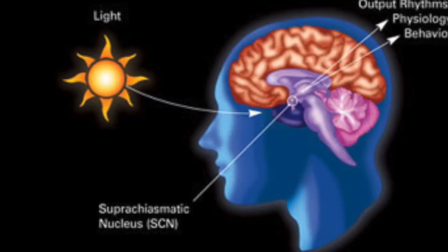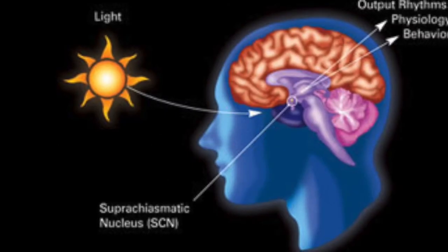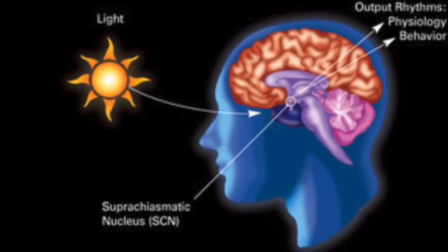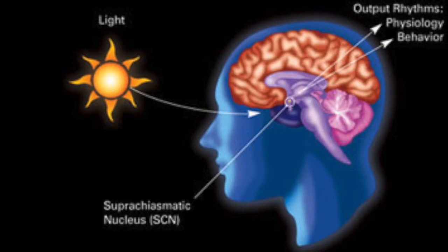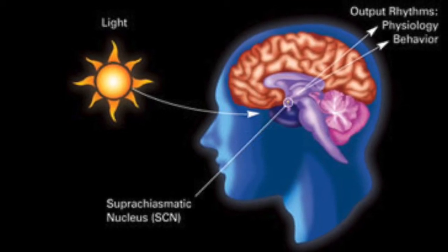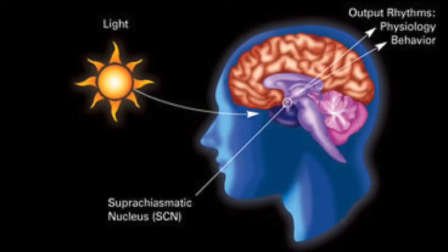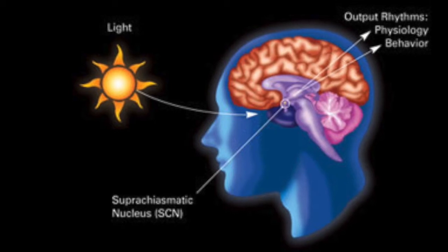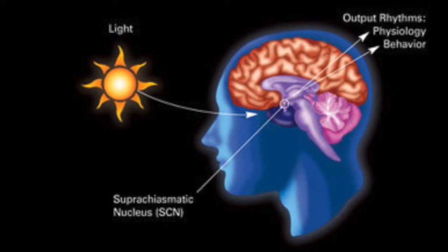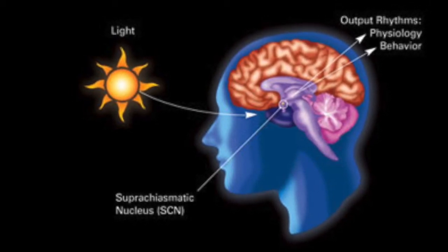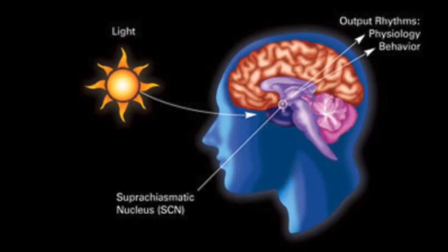A circadian rhythm consists of any physical, mental, or behavioral changes that follow roughly a 24-hour cycle. This process affects sleep cycles, hormones, and body temperature. The disruption of a person's circadian rhythm can lead to sleep disorders, obesity, diabetes, depression, or bipolar disorder.